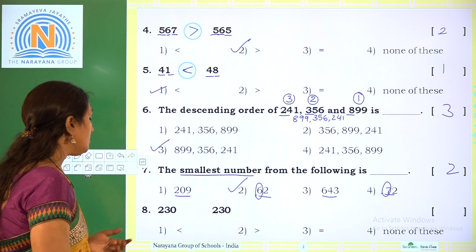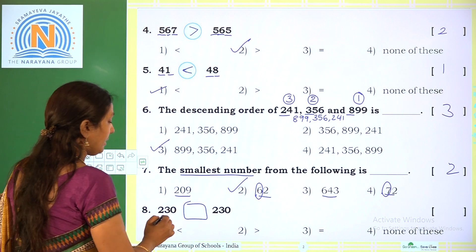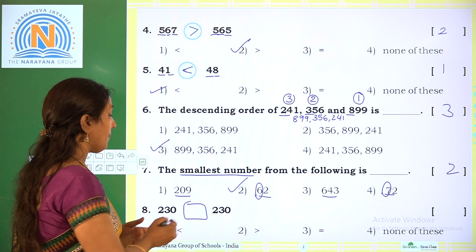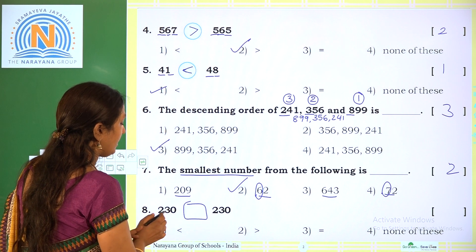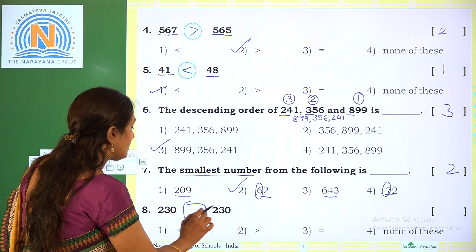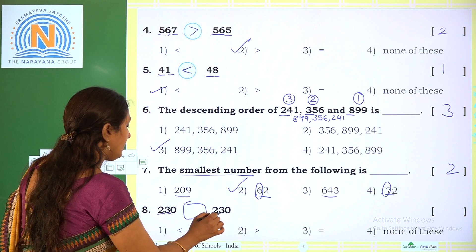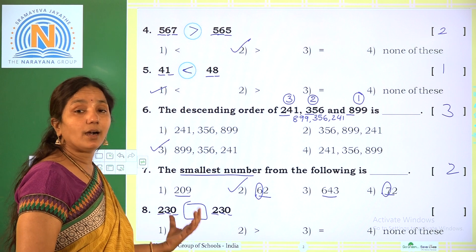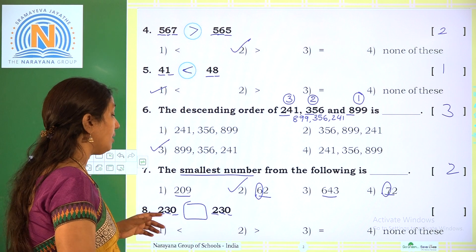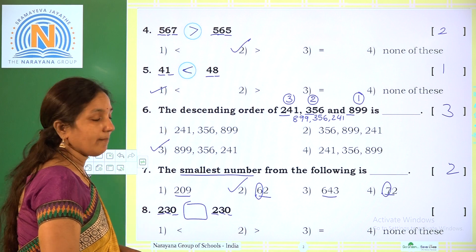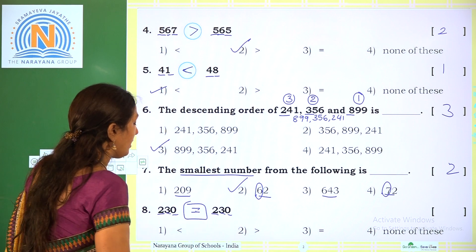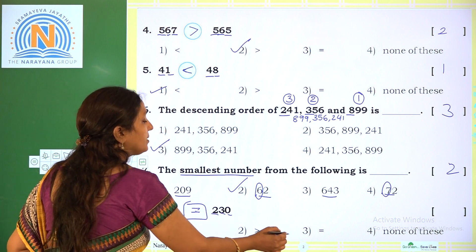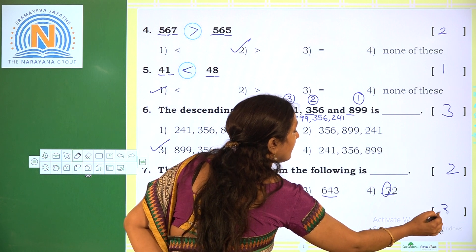Next: compare 230 and 230. Both are 3-digit numbers. Comparing hundreds: 2 and 2. Comparing tens: 3 and 3. Comparing units: 0 and 0. All digits in all places are the same, so both numbers are equal. The equal symbol will come. The correct option is 3.